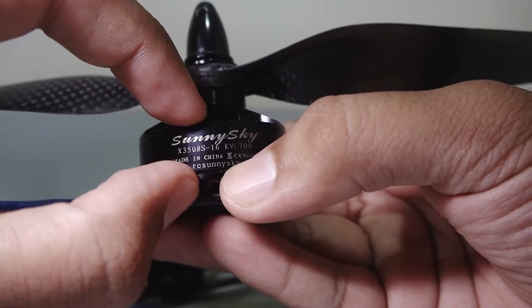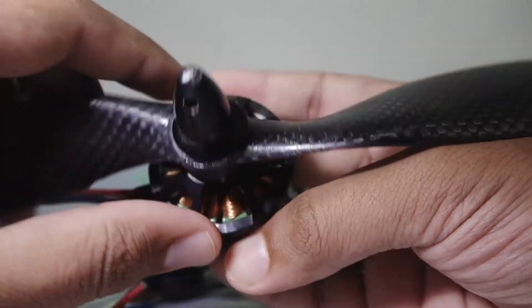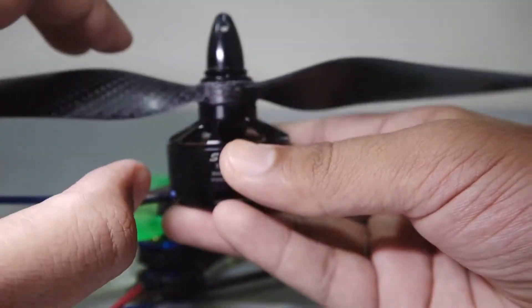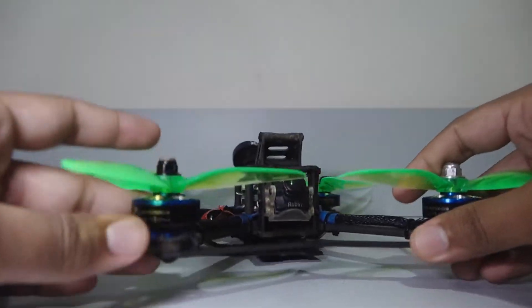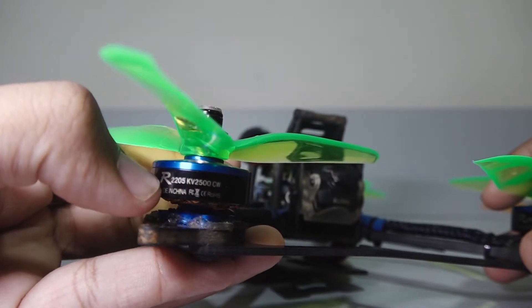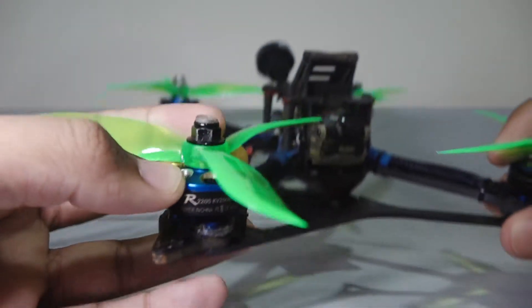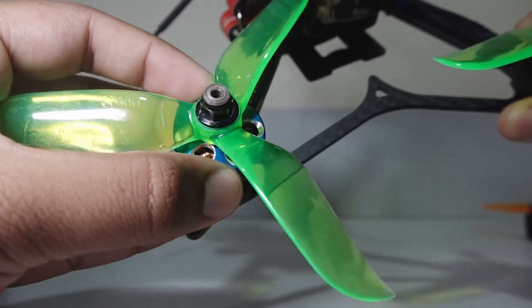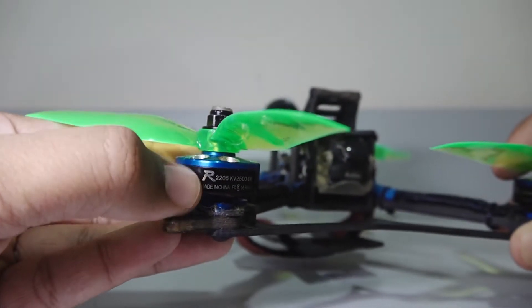The diameter of the stator is 35 mm and the height is 0.8 mm. This motor here is a 2205 motor, so the diameter of the stator is 22 mm and the height is 0.5 mm.